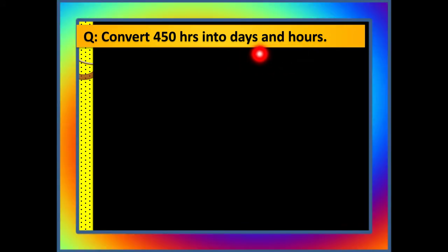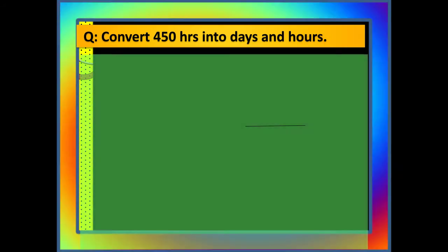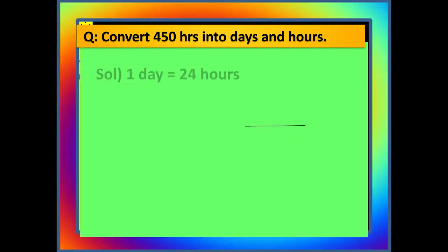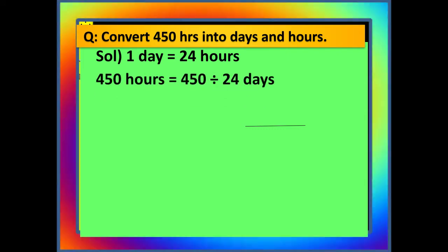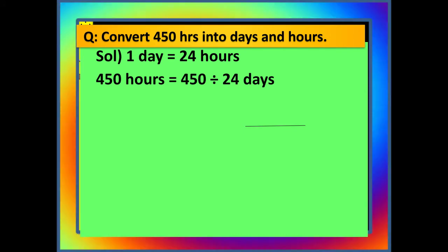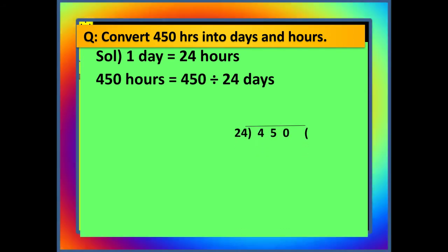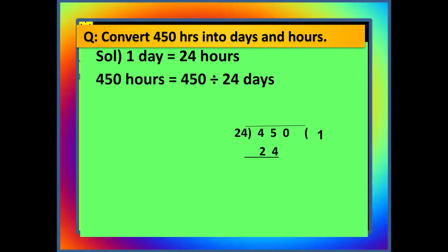Now we are going to convert 450 hours into days and hours. Before that we must state the relation between days and hours: one day has 24 hours in it. So we are going to divide 450 by 24.